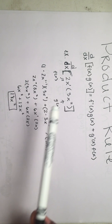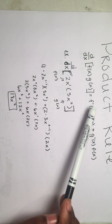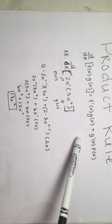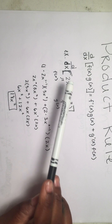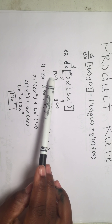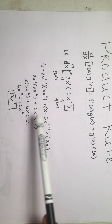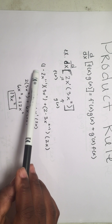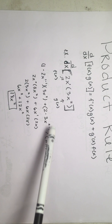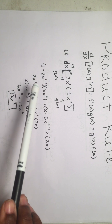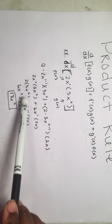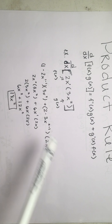The product rule applies when two terms are being multiplied. The derivative of f of x times g of x equals f prime of x times g of x plus g prime of x times f of x. Using the example: the derivative of two x times three x squared — label two x as f of x and three x squared as g of x. Expanding gives one times two x to the zero times three x squared plus two times three x to the one times two x. After simplifying and combining like terms, we get 18 x squared.